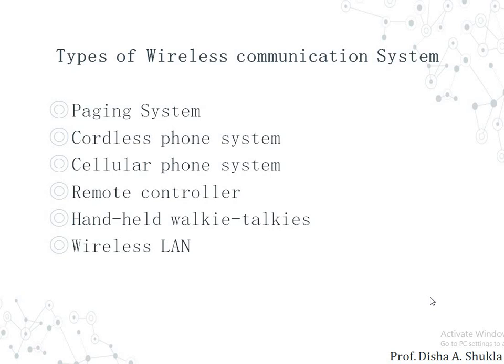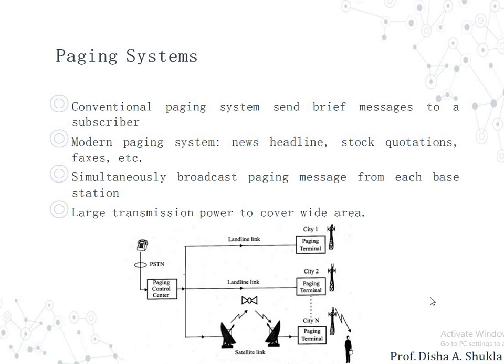The types of wireless communication systems include: the paging system, the cordless phone system, the cellular phone system, a remote controller, a handheld walkie-talkie, and a wireless LAN. The paging system sends brief messages to a subscriber. Modern paging systems carry news headlines, stock quotations, faxes, etc. It simultaneously broadcasts paging messages from each base station, and large transmission power is used to cover a wide area.